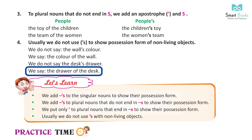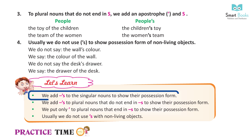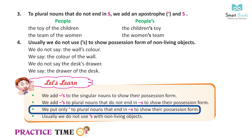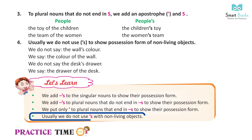Let's learn: We add apostrophe and 's' to singular nouns to show their possessive form. We add apostrophe and 's' to plural nouns that do not end in 's' to show their possessive form. We put only an apostrophe after plural nouns that end in 's' to show their possessive form. Usually we do not use apostrophe 's' with non-living objects.